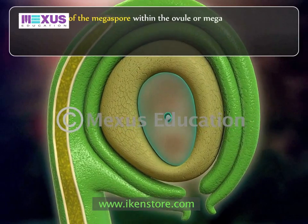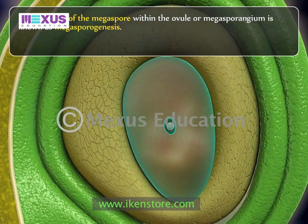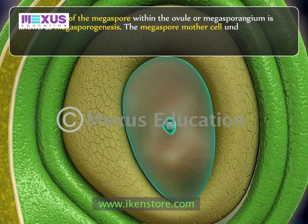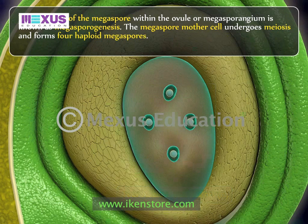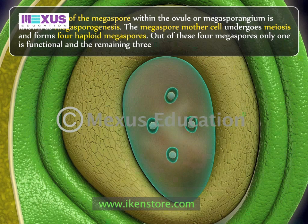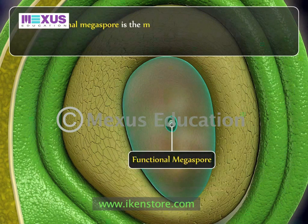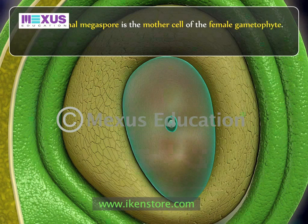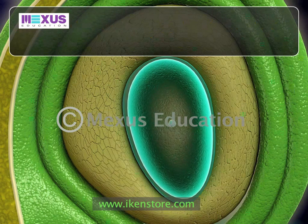Development of the megaspore within the ovule or megasporangium is known as megasporogenesis. The megaspore mother cell undergoes meiosis and forms four haploid megaspores. Out of the four megaspores, only one is functional and the remaining three degenerate.